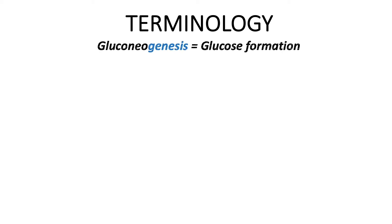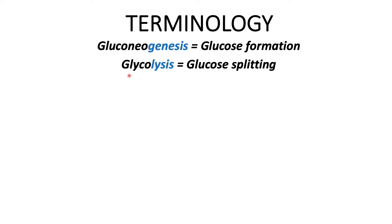Let's revisit gluconeogenesis: 'gluco' refers to glucose, 'neo' refers to new, and 'genesis' refers to formation or creation — so glucose formation. Remember, gluconeogenesis is a process involving the transformation of non-carbohydrate sources into glucose; these sources can include lactate, amino acids, or glycerol. Next is glycolysis: 'glyco' refers to sugar or glucose, and 'lysis' refers to splitting — so glucose splitting. Glycolysis is a common metabolic pathway in cells where energy is made in the form of ATP.